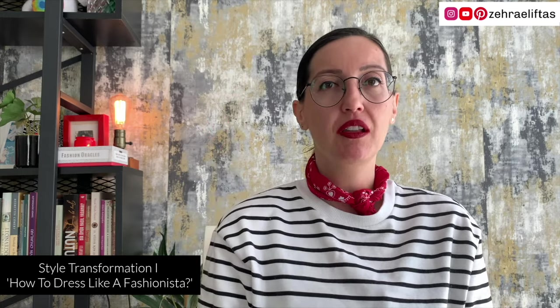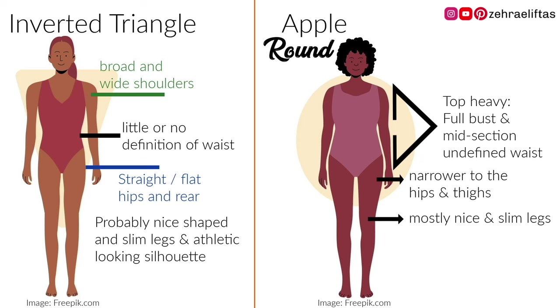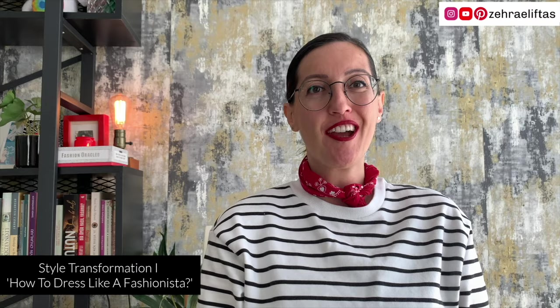Four: apple — like Rebel Wilson, Amy Schumer, and Queen Latifah. In apple or round body shapes, the top is heavy with a full bust and mid-section, the waist is undefined, and it gets narrower toward the hips and thighs. Mostly nice and slim legs, like the inverted triangle.